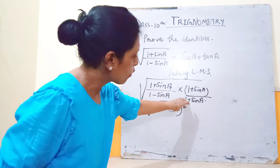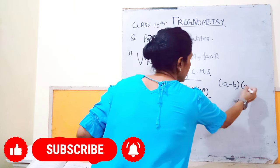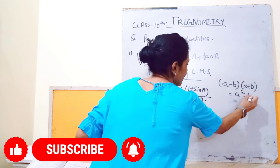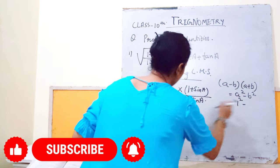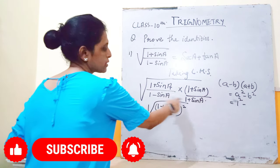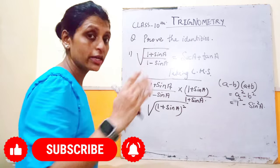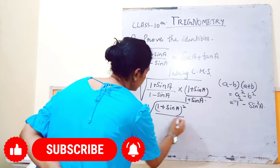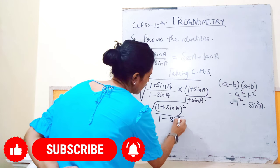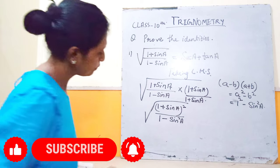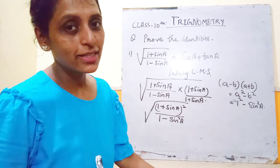In the denominator, (1 - sinA)(1 + sinA) — here we can apply the identity: (a - b)(a + b) = a² - b². So this becomes (1 - sin²A). I'm telling you step by step, so the numerator will have (1 + sinA)² and the denominator will be (1 - sin²A).